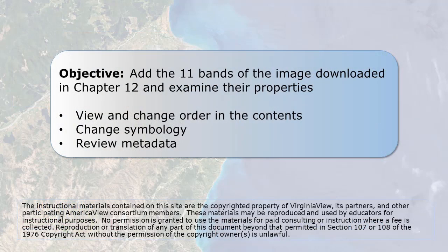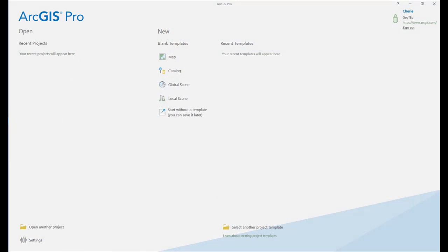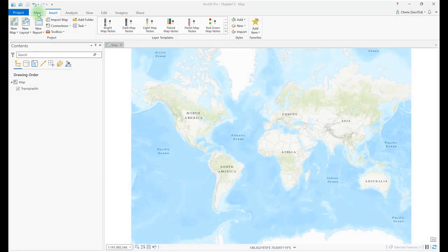The Landsat 8 scene downloaded in the previous chapter provided 11 different images, each with a different band designation and each covering a specific region of the electromagnetic spectrum. In this chapter, we'll add the 11 individual bands or TIFF files into ArcGIS Pro and examine the properties of each of those files. Open ArcGIS Pro and select Map from the Blank Templates area. Now let's add the 11 bands from the Landsat image we downloaded in Chapter 12.